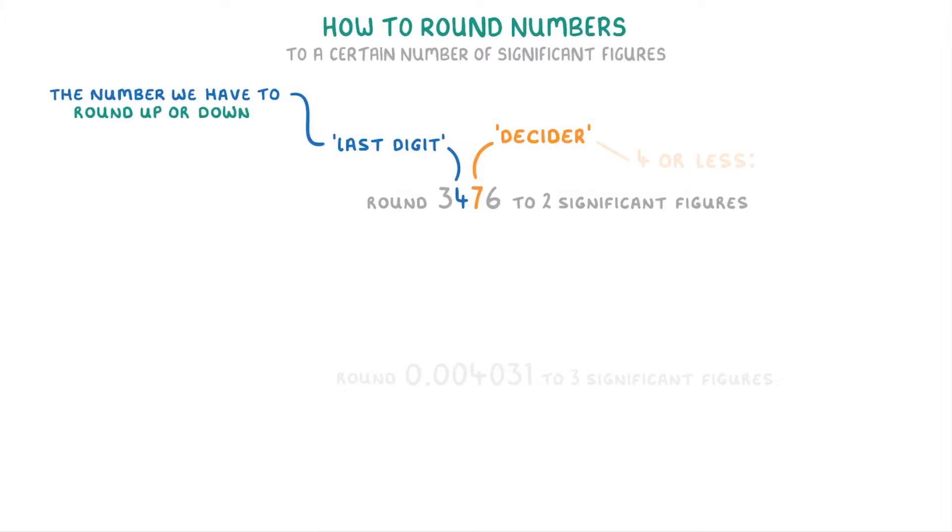If the decider is four or less, then we keep the last digit the same. But if it's five or more, we have to round up the last digit. So because the decider here is seven, we have to round this four up to a five.